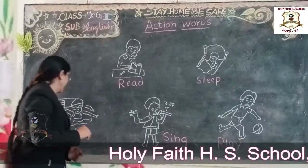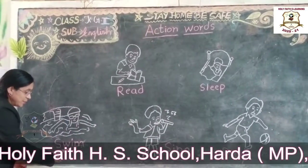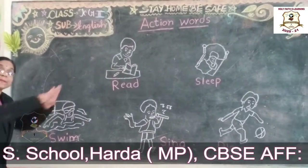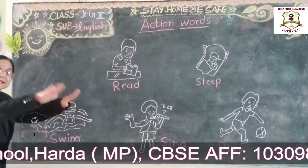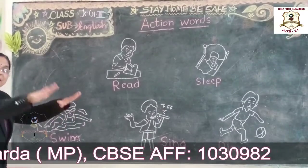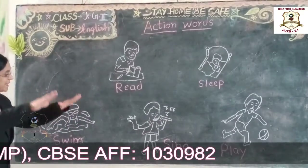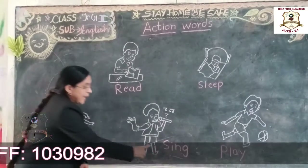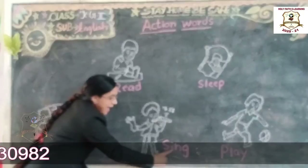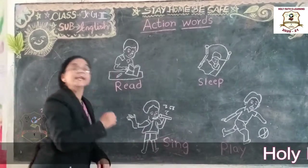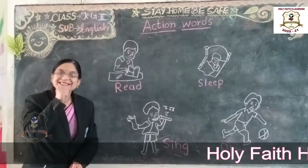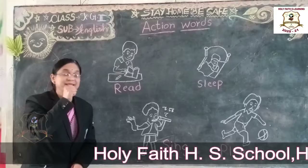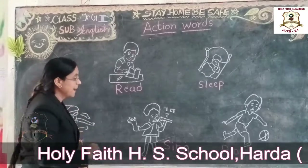Now next. S, W, I, M — Swim. Swim means tairna. S, I, N, G — Sing. Sing means gaana.